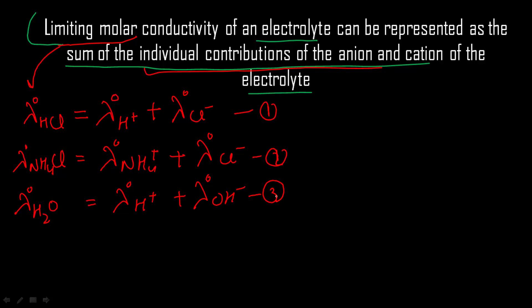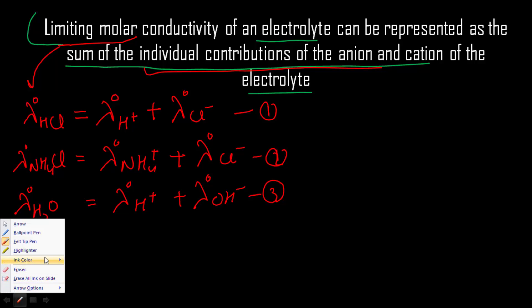Every electrolyte follows this law because we assume that at infinite dilution, the dissociation of even a weak electrolyte is 100%. So at infinite dilution, every electrolyte behaves as a strong electrolyte and follows this law. Now I have three equations — let's have a look at the advantages of this law.